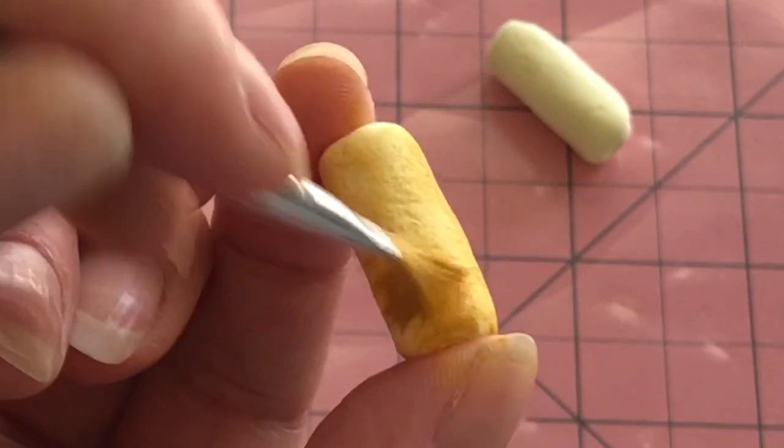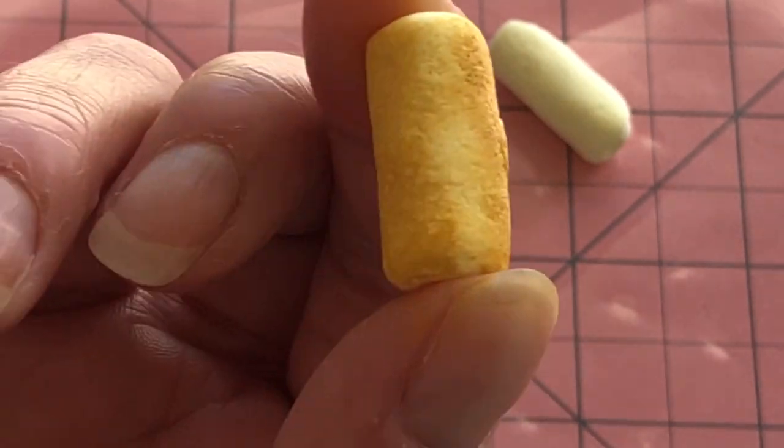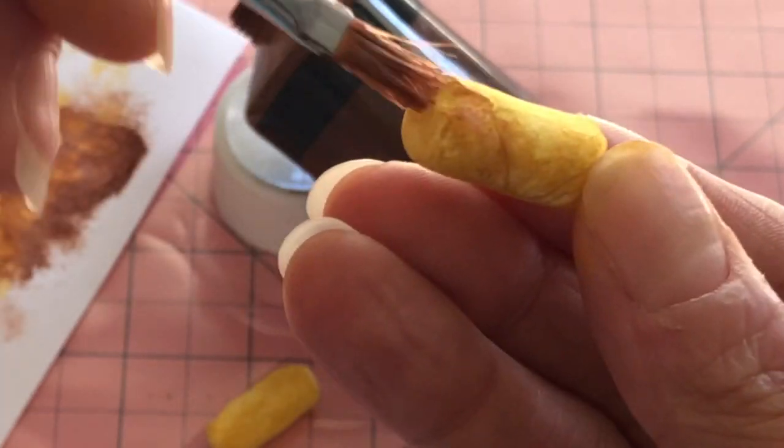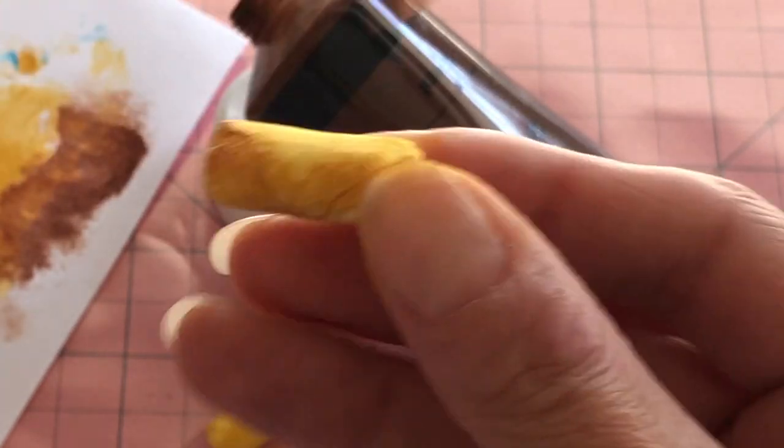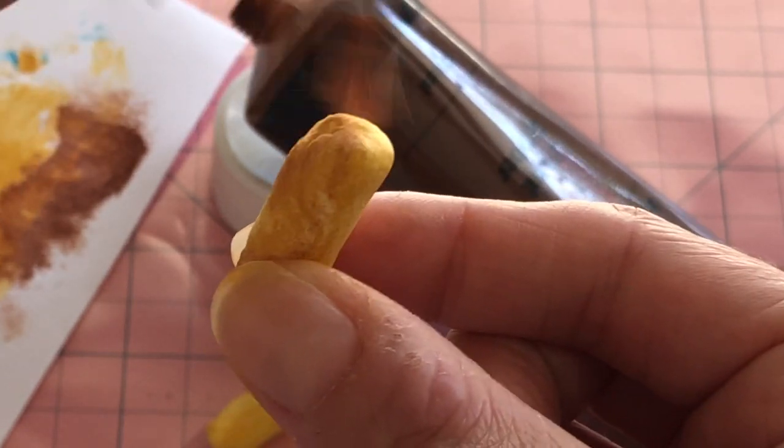Apply a second coat of the same colour to deepen the egg roll, but allow some areas to be the lighter shade, as seen on screen. Finish with a darker chocolate brown colour to paint on the ends and over the folds.